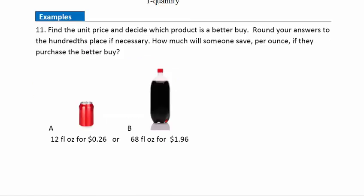Now let's take a look at an example that will help you understand how to use the unit price to compare products to see which is a better buy. Example 11. Find the unit price and decide which product is a better buy. Round your answer to the hundreds place, if necessary. And the hundreds place, that makes sense, because that's our nearest cent. And then after that, how much will someone save per ounce if they purchase the better buy? Well let's take a look at A here. So we want dollars per quantity. This is what we're shooting for. Money per one, in this case, ounce is the way we want to set these up. Because our products here are measured in ounces.